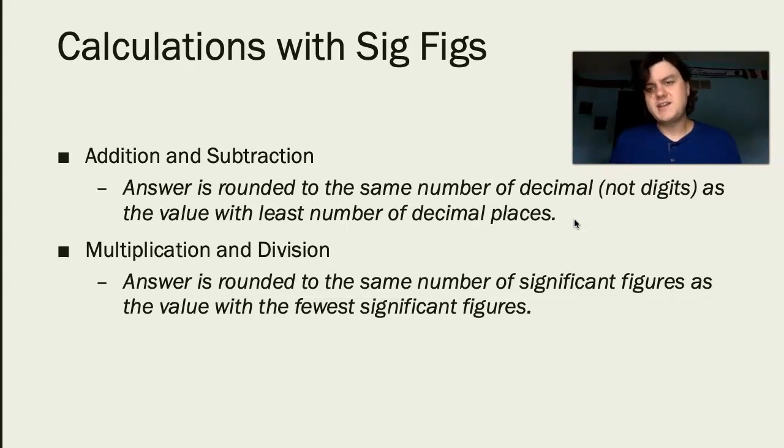When we are adding and subtracting, it gets just a bit more complicated. Instead of counting how many sig figs are in each of the starting components, you need to identify which of the starting components has the fewest number of decimal places. It's the least precise in and of itself. Whatever number has the fewest number of decimal places, you are going to round to the same number of that decimal. If its least precise digit is in the tenths place, you would round your final answer to the tenths place.